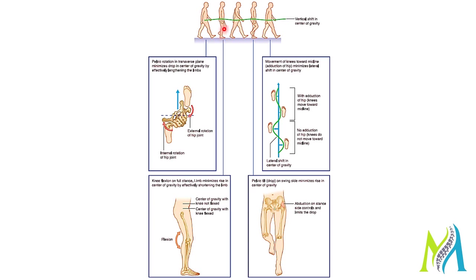When your right foot is fixed on the ground and you are lifting your left leg, there is knee flexion. This knee flexion minimizes the rise in the center of gravity and causes shortening of the limb, allowing you to push forward. Without knee flexion, the center of gravity would be higher; with knee flexion, it drops slightly, giving you some shortening of the limb.